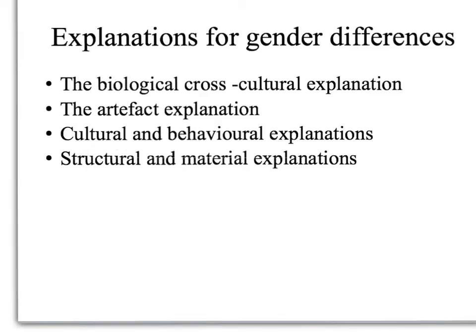The cultural explanation presents two views: the licence view, which suggests it is more acceptable for women to admit being ill; and the women coping view, which suggests women are expected to cope with illness because of their domestic responsibilities. The structural and material explanation notes that women spend more time at home, making bad housing more likely to affect them, and women are more likely to suffer poverty — for example, as lone parents. Bernard shows that married women and single men have the worst health, including mental health, because married women sacrifice their own wellbeing for their husbands and families.